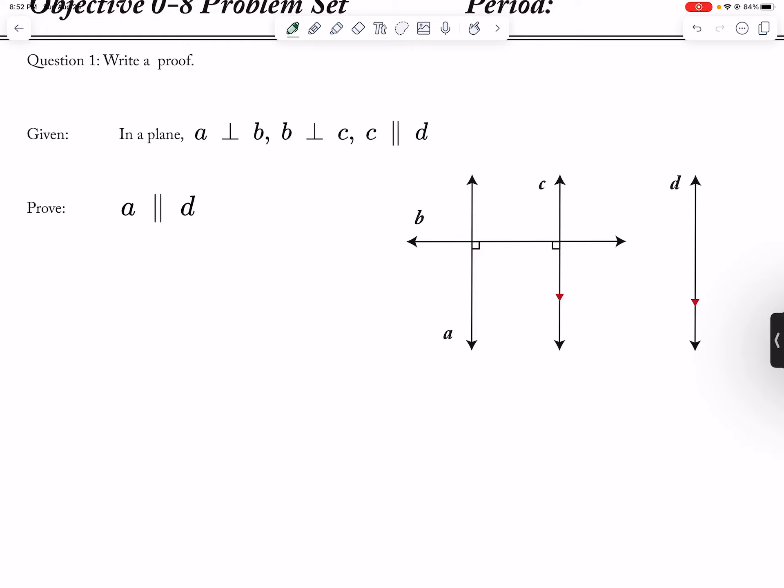Okay, so let's look at this proof here. Here's statements and reasons. And so we have A is perpendicular to B and B is perpendicular to C and that is given.